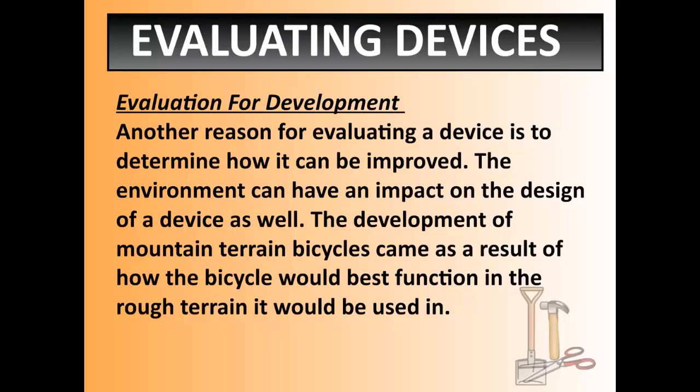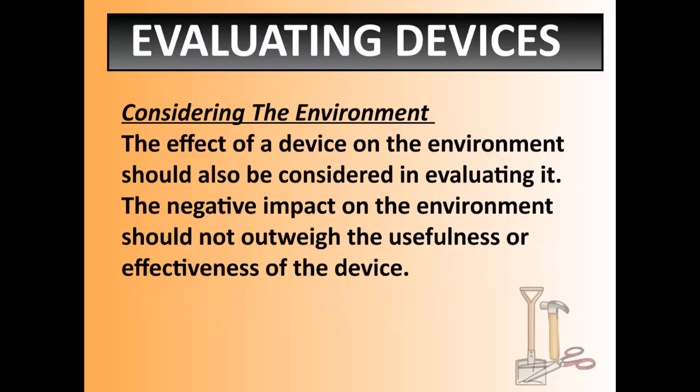Now when we evaluate a device for development, it's to determine how it can be improved. The environment can have an impact on the design of a device as well. For example, mountain terrain bicycles came as a result of how the bike would best function in rough terrain — they developed the bike based on where it would need to be used. We also evaluate machines considering environment: what environmental costs or factors will play a role when this machine is being used, and after it's been discarded, how will it be discarded? And do those decisions outweigh how useful or effective the machine could be?